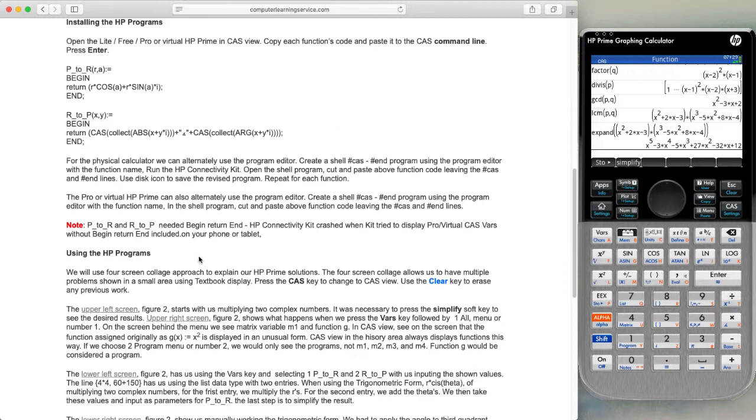There is a note on this page about the HP connectivity kit crashing when we attempt to display these variables without begin, return, end. With the current HP connectivity kit, this is not a problem. We have highlighted and pasted the name of the function into our clipboard. We will go over to our calculator and in the command line, we will paste this in by hitting control V.